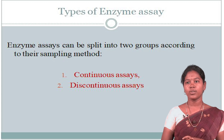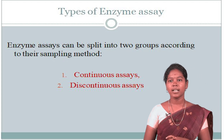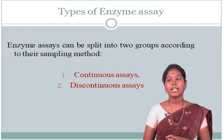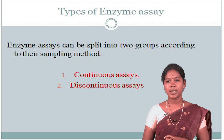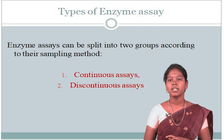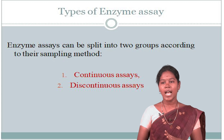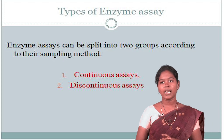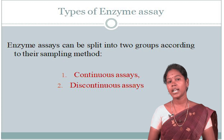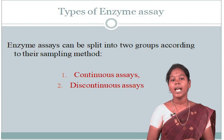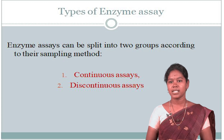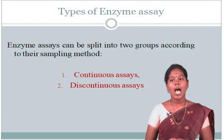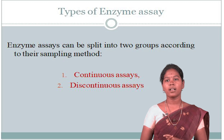The second type is the discontinuous assay, where samples are taken, the reaction is stopped, and then the concentration of substrate and product is determined. The reaction proceeds for a designed time, then the reaction is stopped — usually by inactivating the enzyme using weak acids. A measurement is made of the amount of reaction that has occurred.